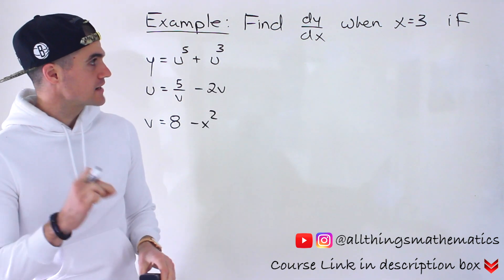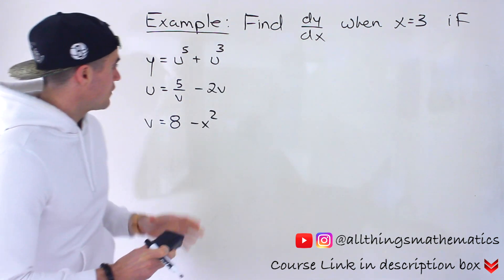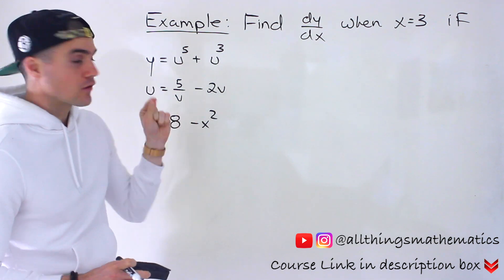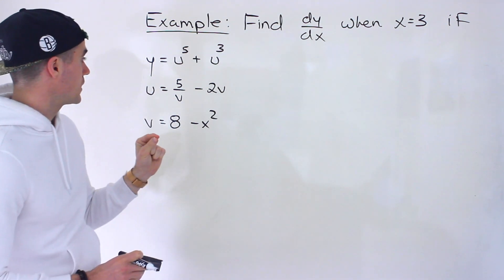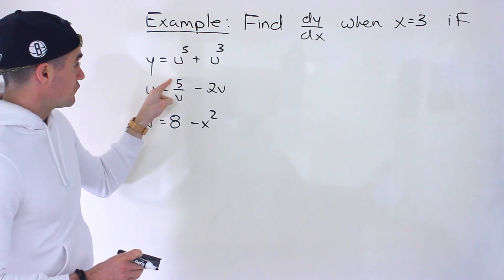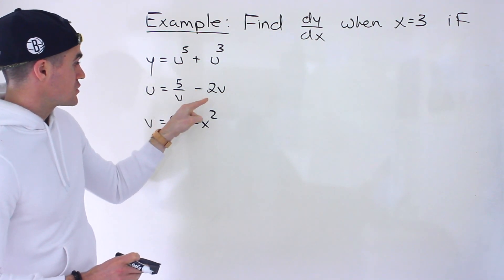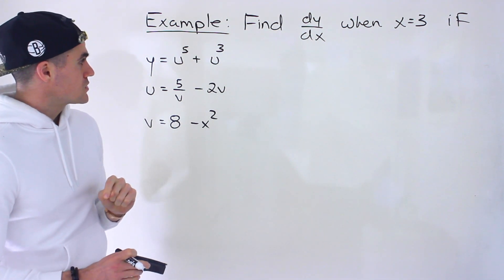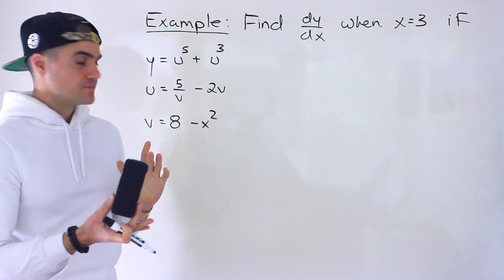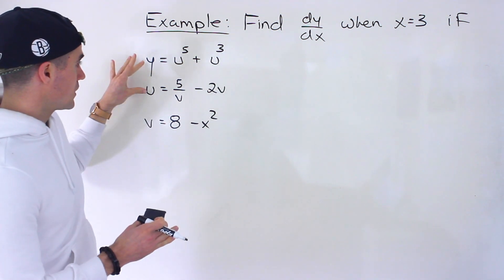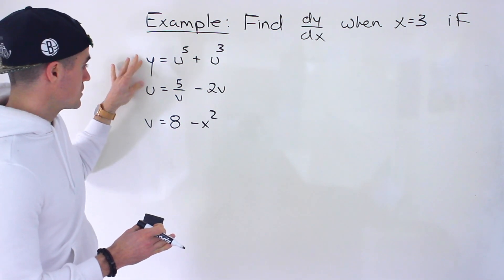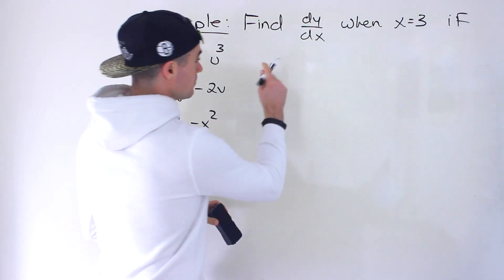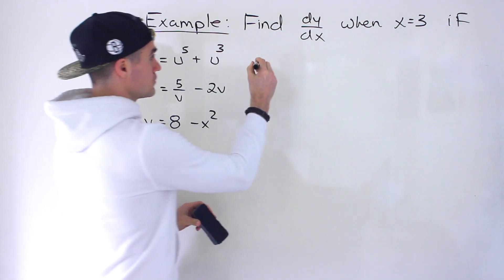We have to find dy/dx when x is equal to 3, given three different functions: y equals u to the power of 5 plus u to the power of 3; u equals 5 over v minus 2v; and v equals 8 minus x squared. Most questions give two functions, but here we have three, so there are going to be three different chains when we apply the chain rule.